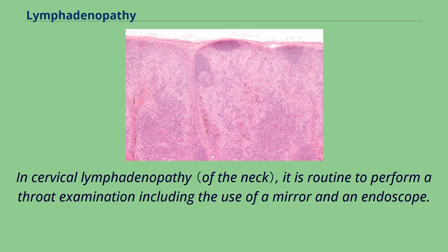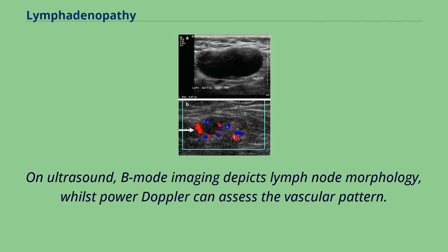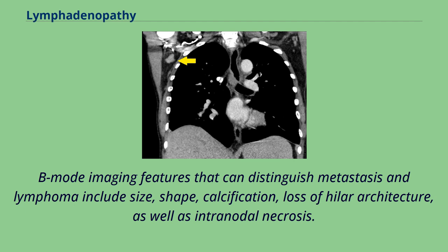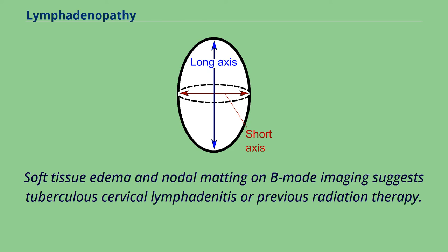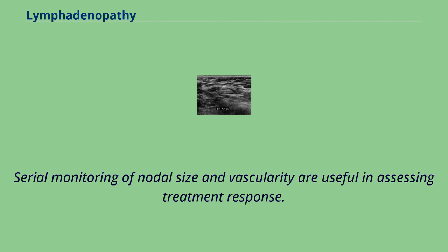In cervical lymphadenopathy, it is routine to perform a throat examination including the use of a mirror and an endoscope. On ultrasound, B-mode imaging depicts lymph node morphology, whilst Power Doppler can assess the vascular pattern. B-mode imaging features that can distinguish metastasis and lymphoma include size, shape, calcification, loss of hilar architecture, and intranodal necrosis. Soft tissue edema and nodal matting on B-mode imaging suggests tuberculous cervical lymphadenitis or previous radiation therapy. Serial monitoring of nodal size and vascularity are useful in assessing treatment response.